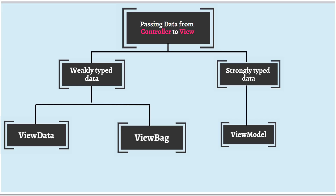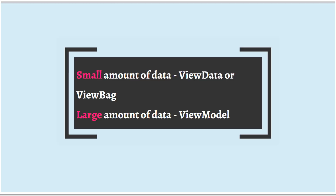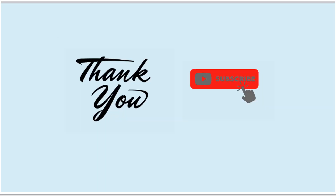With this, we have covered all the different ways to pass data from controller to view. The question is when to go for weakly typed data and when to go for strongly typed data. The best practice is: if you have a small amount of data, then you can go for ViewData or ViewBag. If you want to send a large amount of data, then ViewModel would be the best approach. We have come to the end of today's session — I hope you are clear with all three concepts. See you soon in the next video. Thank you.